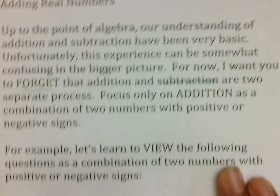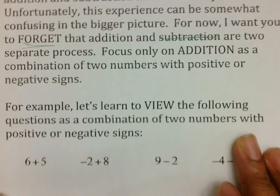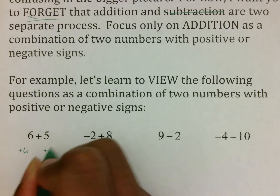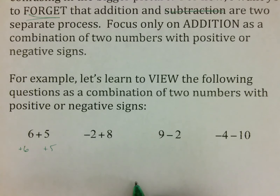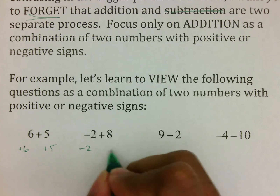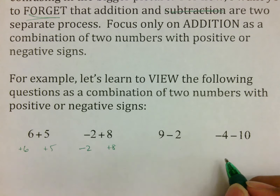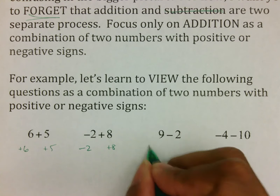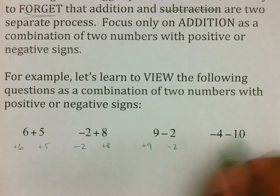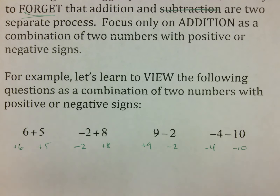For example, learn to view the following questions as a combination of two numbers. This is not 6 plus 5 — it is a positive 6 combined with a positive 5. This is not negative 2 plus 8 — it is a negative 2 combined with a positive 8. This is not 9 minus 2 — it is a positive 9 combined with a negative 2. And this is not negative 4 minus 10 — it is a negative 4 combined with a negative 10. You are simply combining two numbers and seeing what their result is.